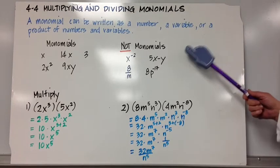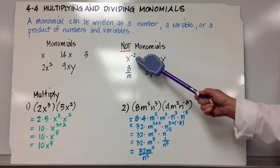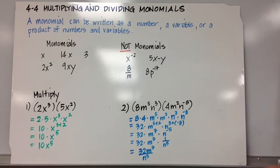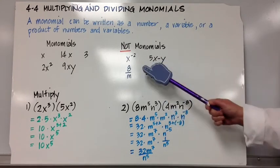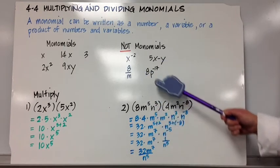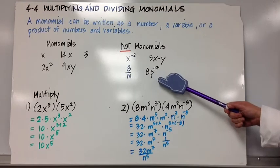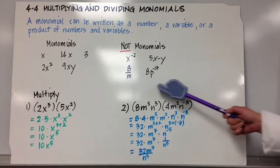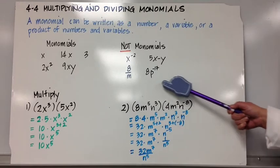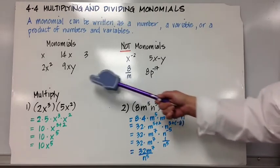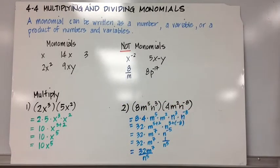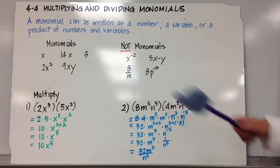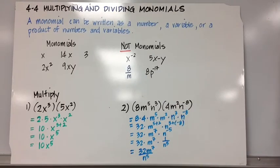Not monomials: x to the negative 2 power, 5x minus y, 8 over m, and 8p to the negative 17th power. Look at these examples of non-monomials versus what is a monomial — it should be perfectly clear what is and what is not a monomial.